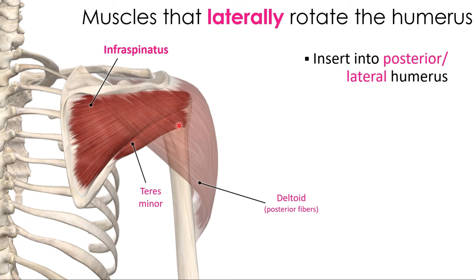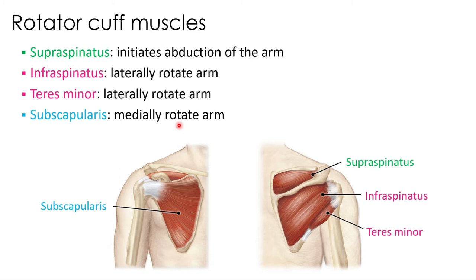The four rotator cuff muscles are the supraspinatus, infraspinatus, teres minor, and subscapularis. The supraspinatus sits above the spine of the scapula and initiates abduction of the arm — it isn't a very strong muscle but starts the motion, after which the lateral deltoid takes over. The infraspinatus and teres minor laterally rotate the arm, while the subscapularis medially rotates it. All four insert into either the greater tubercle or the lesser tubercle of the humerus — the subscapularis inserts into the lesser tubercle, while the other three insert into the greater tubercle.